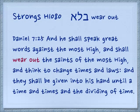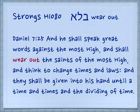In the Aramaic in Daniel, this is spelt bala — with an aleph instead of a hey — a verse that we know: Daniel 7:25: 'And he shall speak great words against the Most High, and shall wear out the saints of the Most High, and think to change times and laws. And they shall be given into his hand until time, times, and the dividing of time.' Feels like about now, right?